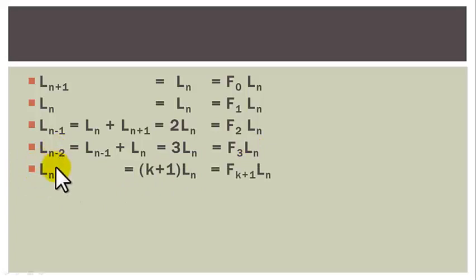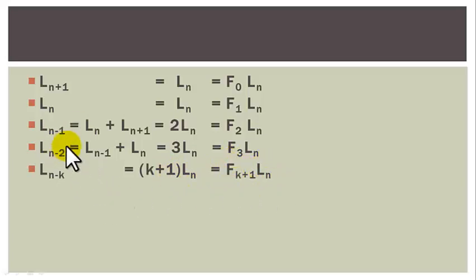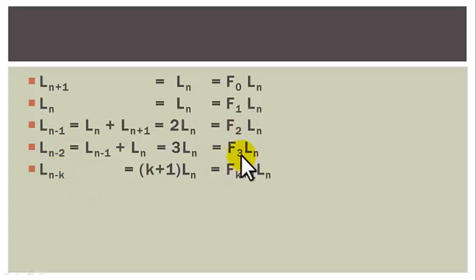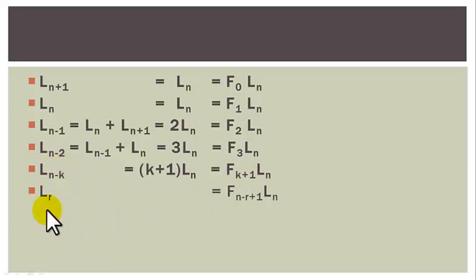So if we continue this way we will get to LN-K, which is equal to FK+1 times LN. Please observe the pattern: when it is 1 here, what we have here is 2; when it is 2 here, what we have here is 3; so when it is K here, what we have is K plus 1. So if we let N minus K equal to R, it follows that K is equal to N minus R, so that we can write this as FN-R+1 times LN.